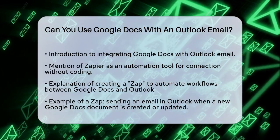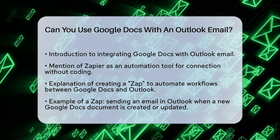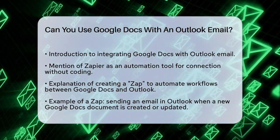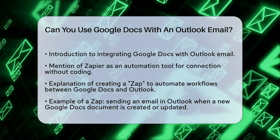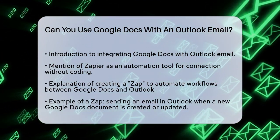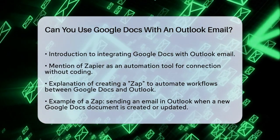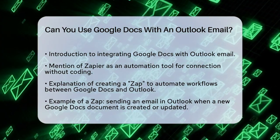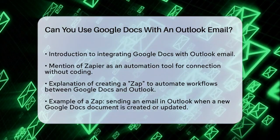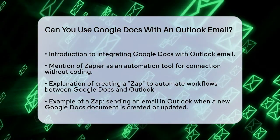First, let's talk about using Zapier, a powerful automation tool. Zapier allows you to connect Google Docs and Microsoft Outlook without needing any coding skills. You can set up a workflow known as a Zap in just a few minutes. For example, you can create a Zap that sends an email in Outlook whenever a new document is created or updated in Google Docs.